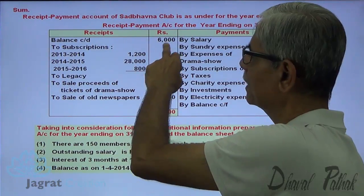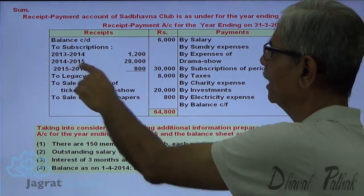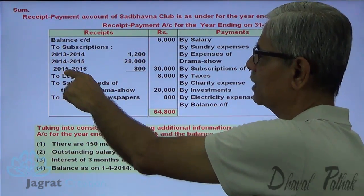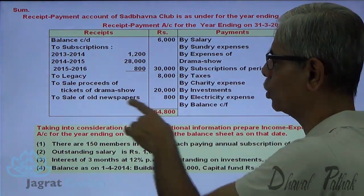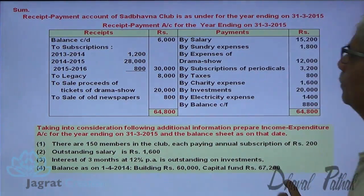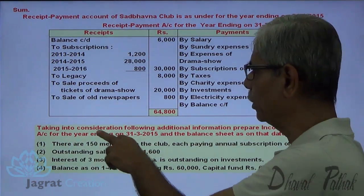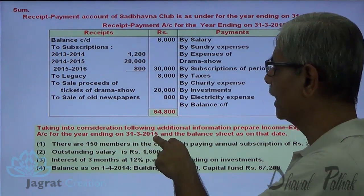The receipts include: opening balance ₹6,000; subscriptions for 2013-14, 2014-15, and 2015-16; legacy; sales proceeds from drama show tickets; sale of old newspapers. The payments include: salary, sundry expenses, drama show expenses, subscription for periodicals, taxes, charity expenses, investments, electricity expenses, and a closing balance carried forward.